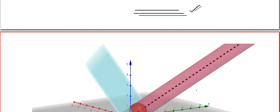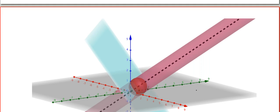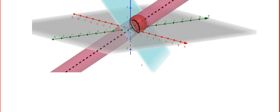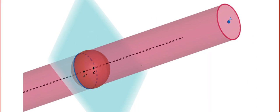Now let us see the final picture. We have a plane and the plane intersects the sphere so that we can see the circle, and then here goes the axis and the cylinder. Can you see a plane, a sphere, a circle, a line, and finally our cylinder? This is why the problem is very special.